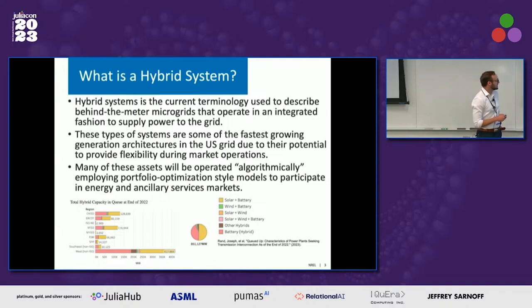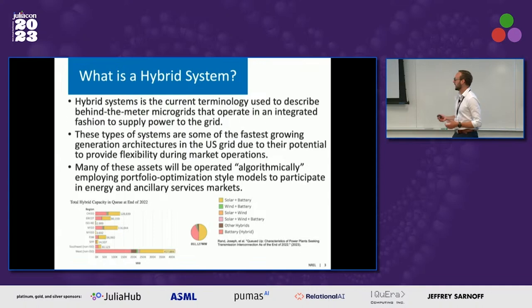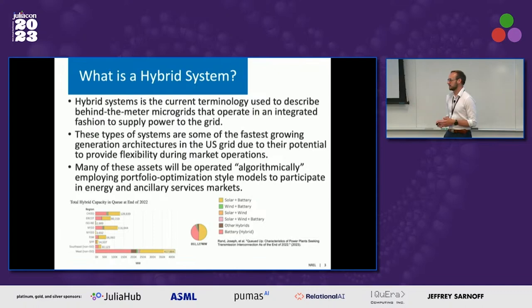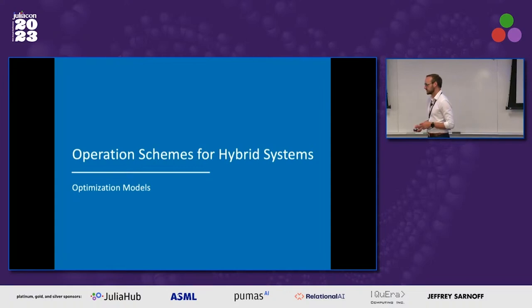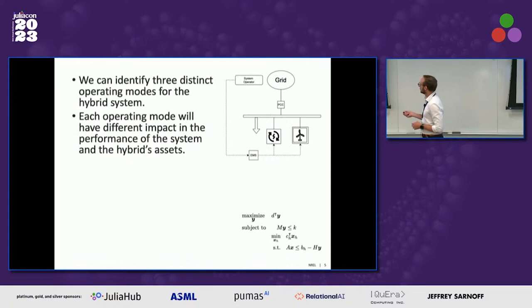It's basically a combination of different storage assets with different generation assets. There's almost a terawatt in the queue right now to be installed in the U.S., and operators and utilities have questions about how these assets will operate. What we've been observing is that a lot of these assets will operate algorithmically — there's not an operator behind trying to ramp up and down, but they will actually be operated by optimization systems that run a portfolio of assets behind the meter.